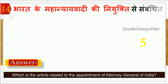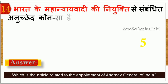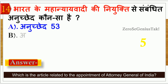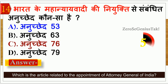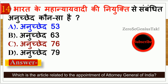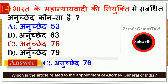The next question: Which Article is related to the appointment of the Attorney General of India (Mahaniyavadi)? The correct answer is Article 76, which is option number B.